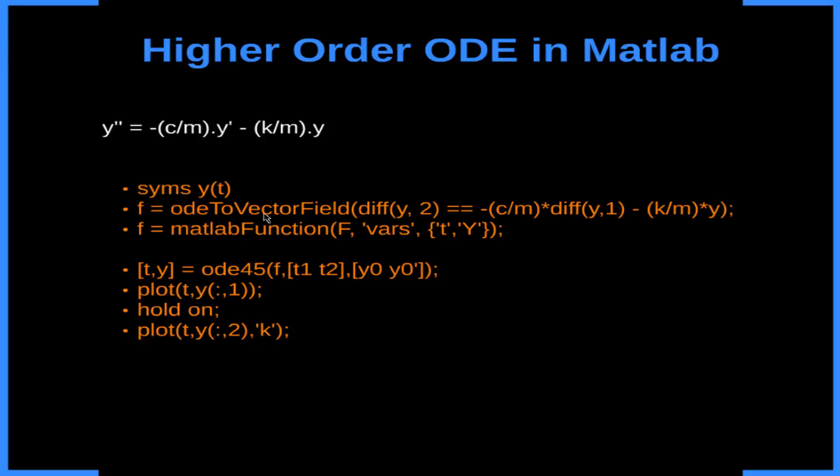So we're going to call diff of Y 2, that means the second derivative of Y is going to be equal to this constant here, this coefficient here, times the diff of Y 1, that means it's our y prime, and minus k over m times Y.